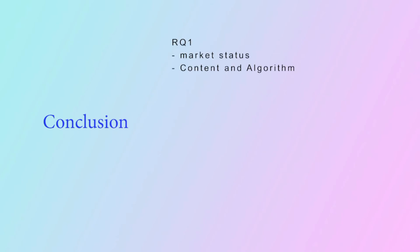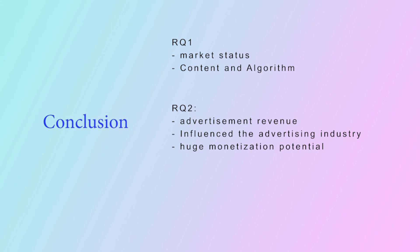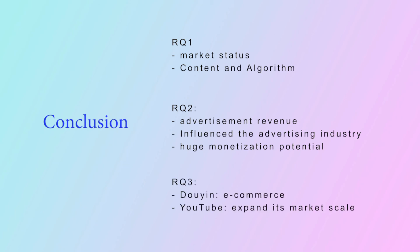In this video, we first analyzed the current market status of the video industry, where companies choose their operation modes according to market status. The operation modes are centered around two factors: content and algorithm. The operation modes indicate that platforms may rely on advertising revenue currently. For video platforms, even those now breaking even have huge monetization potential. In the future, Douyin is planning to develop its e-commerce sector while YouTube is planning to expand its market reach. That is all for my final video presentation — I hope you enjoyed watching it.